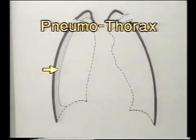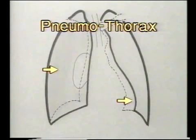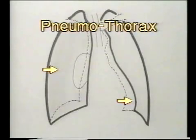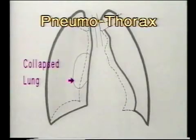When large, it produces a complete collapse of the lung and shift of mediastinum to the opposite side. Note the collapsed right lung which gets collected as a radio opaque shadow at the hilum in massive pneumothorax.